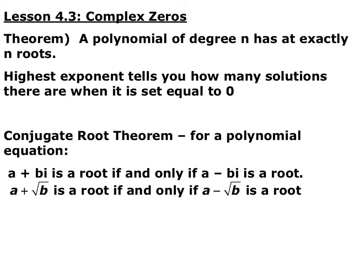Section 4.3 is the complex zeros of polynomial functions. A polynomial of degree n has exactly n roots or zeros. Some or all of them might be rational zeros like we talked about in section 4.2, but some or all of them might be either complex numbers or square roots.